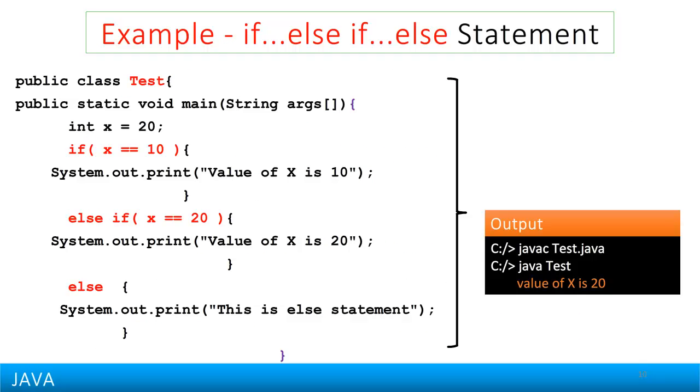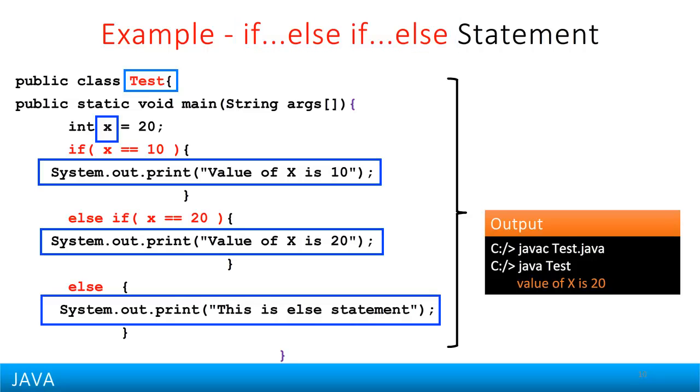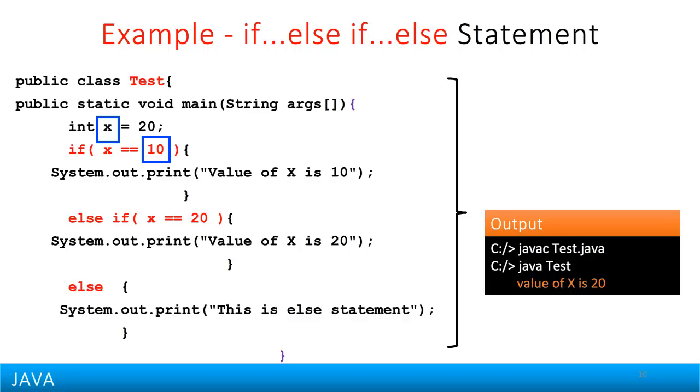Let's see an example. Here we define a class test in which we define the variable X and assign it a value of 20. Then we use the IF THEN ELSE IF statement to check this value of X and depending on the value of X, we print different messages as shown here. We check for values of X being 10 or 20 or any other value through the three checks that we have in the IF THEN ELSE IF statements shown here.